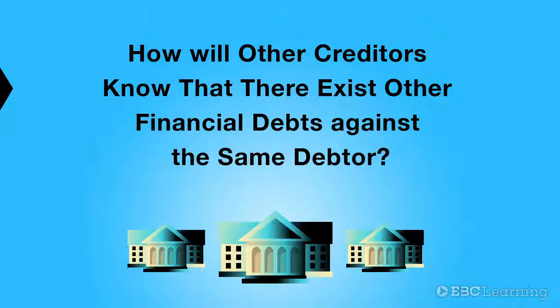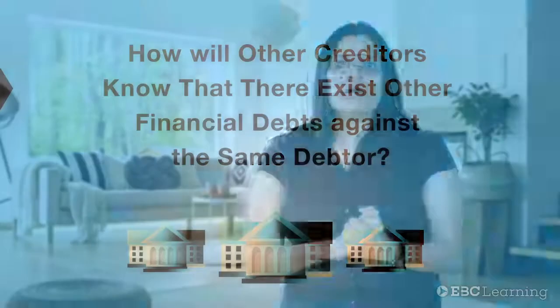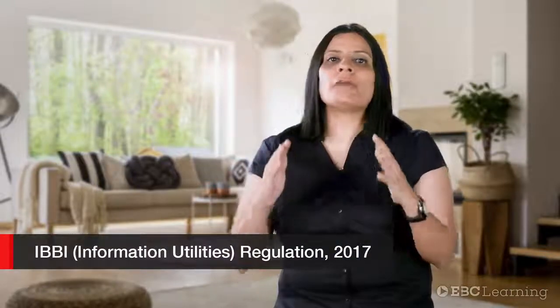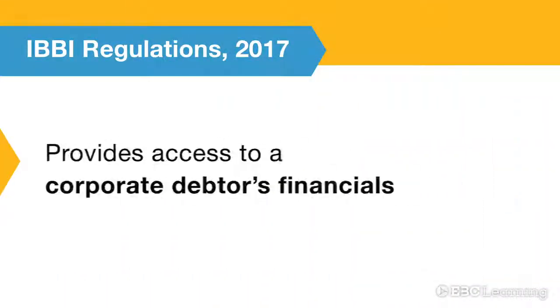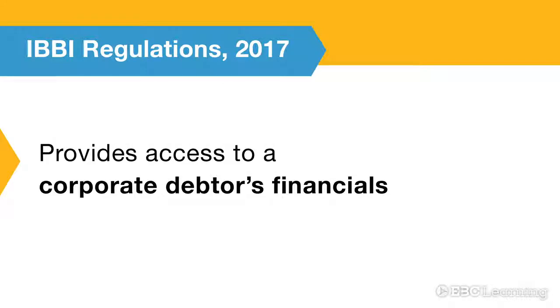The question arises: how will other creditors know that there exist other financial debts against the same debtor? To overcome this hurdle, the Insolvency Regulator IBBI — that is, the Insolvency and Bankruptcy Board of India — has come out with the IBBI Information Utilities Regulations of 2017. With these regulations, access to information related to financial debt and repayment of financial debt by a corporate debtor is sought to be available in a timely manner to each of the financial creditors of the corporate debtor.